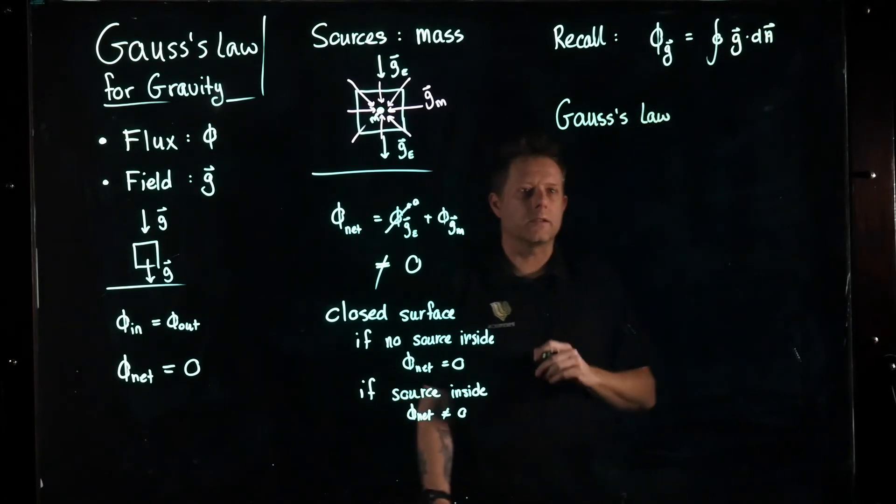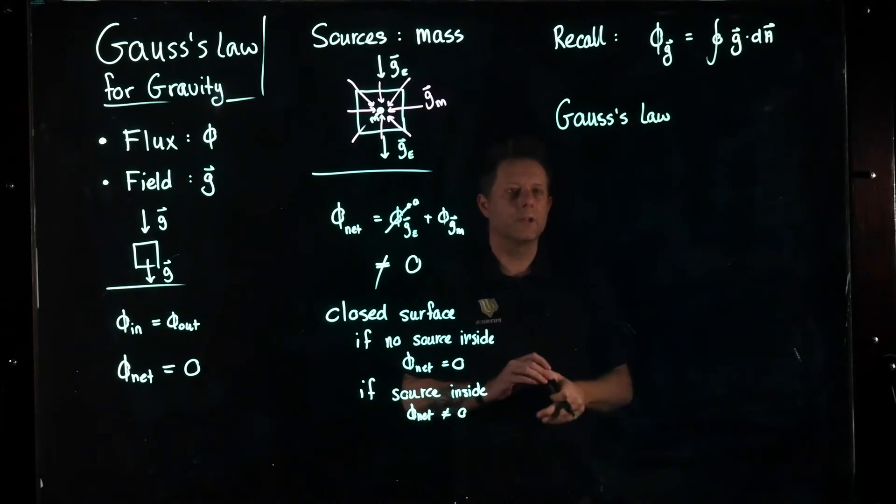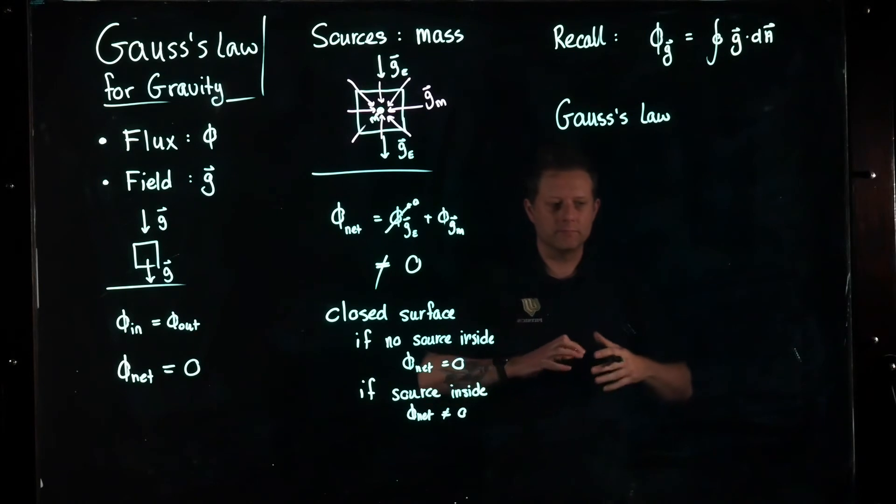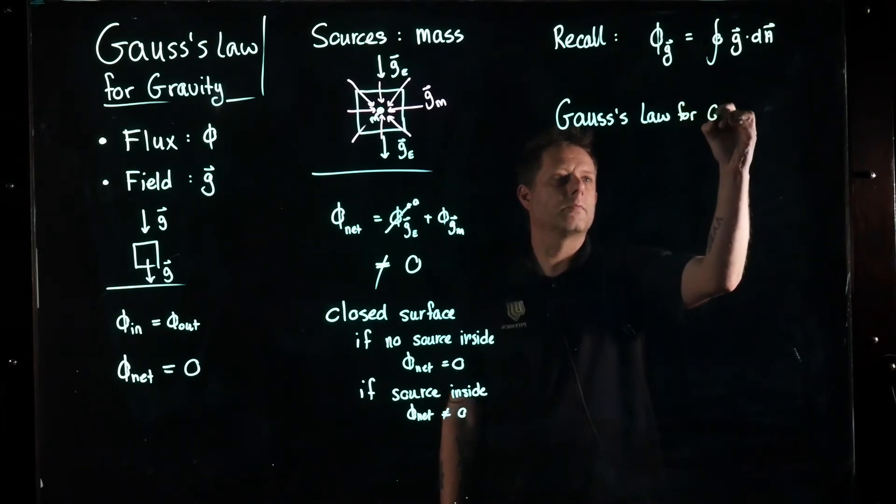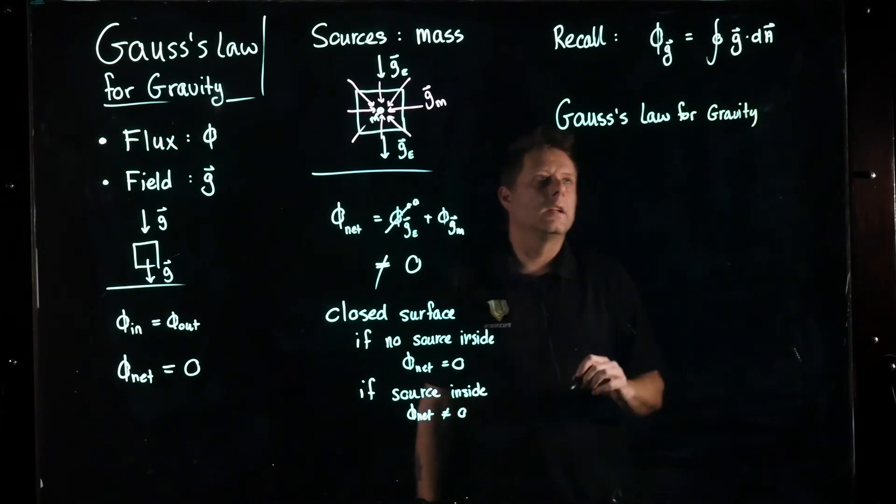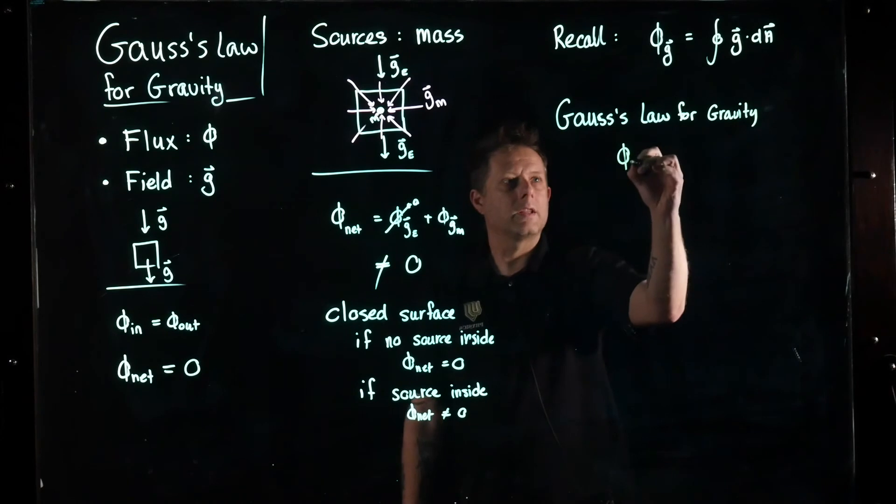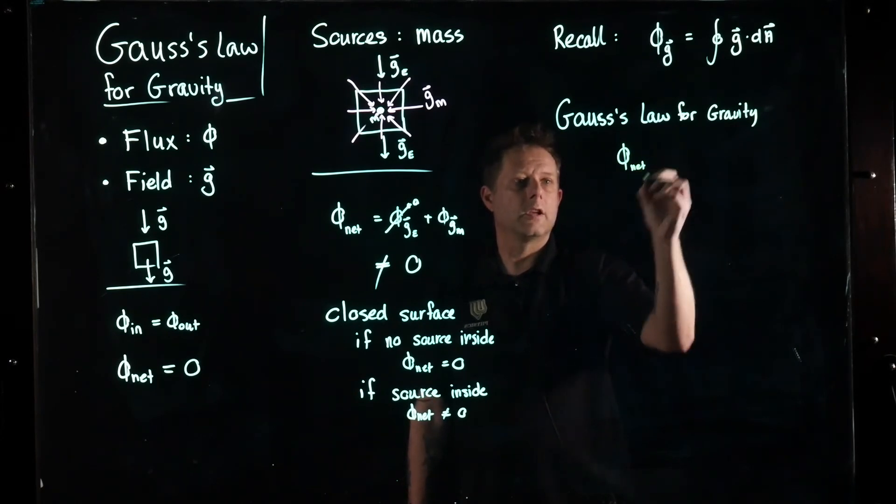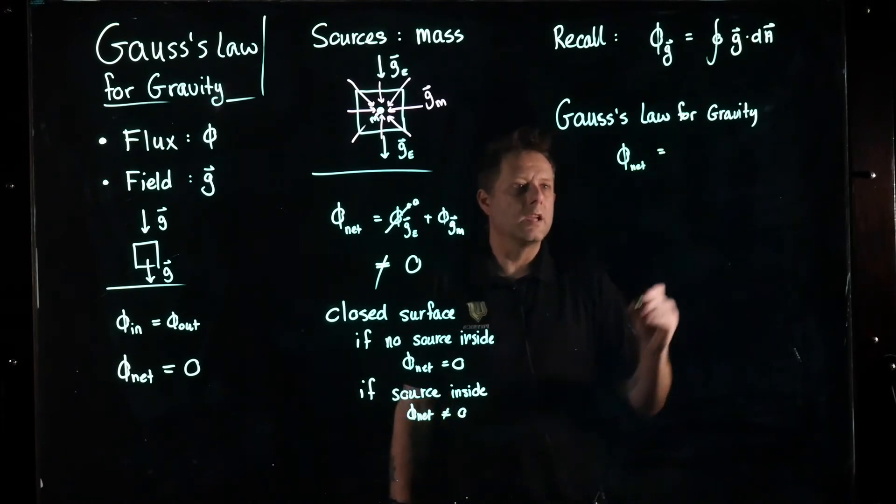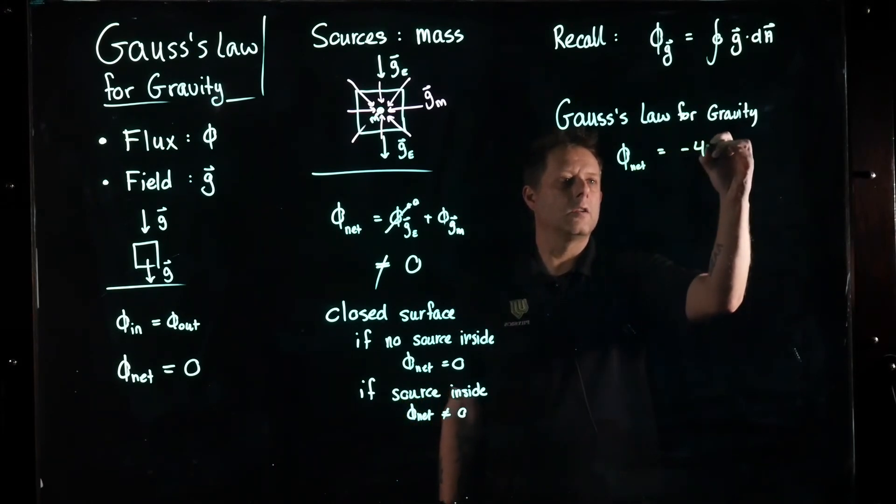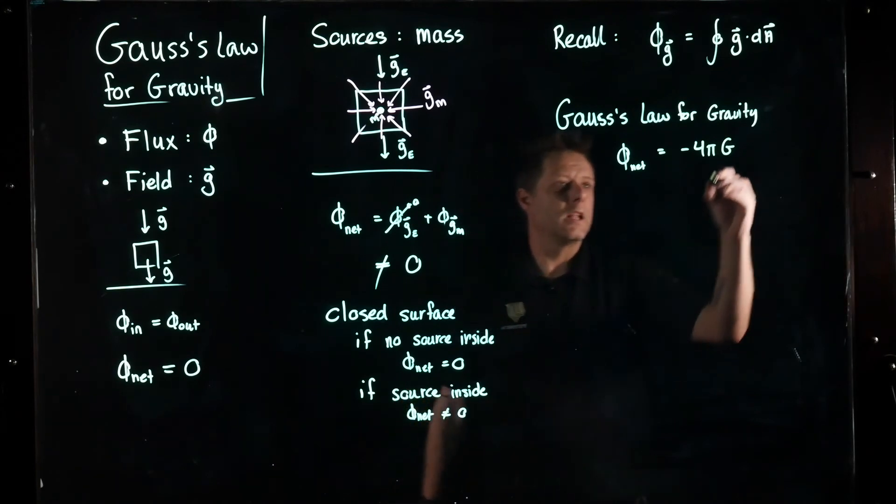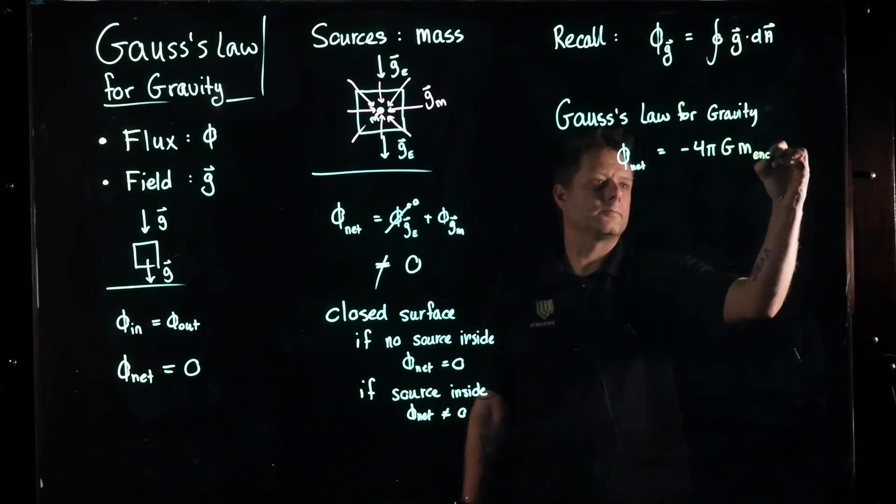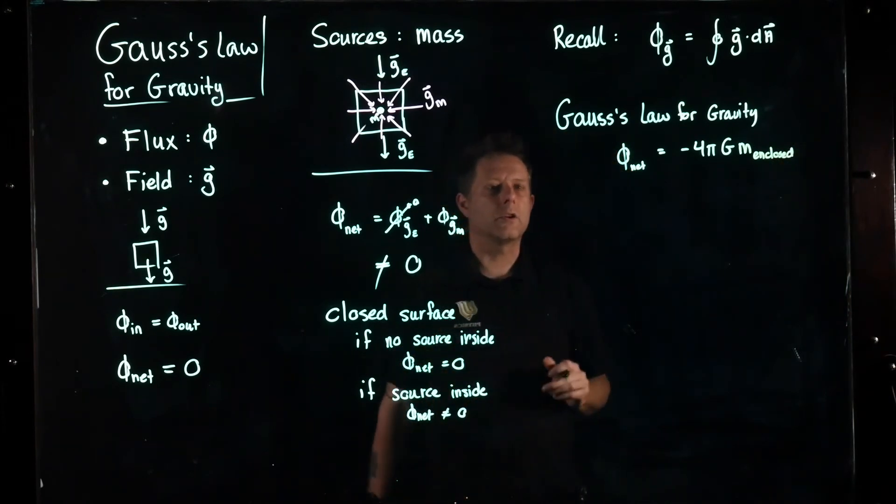This really comes from classical field theory. We're going to just state Gauss's Law for gravity tells us that the net gravitational flux through a closed surface is equal to negative 4π times the constant G, this is the gravitational constant from Newton's Law of gravity, times the mass that is enclosed inside that closed surface.